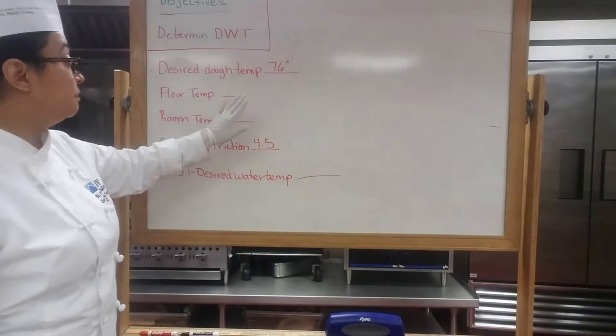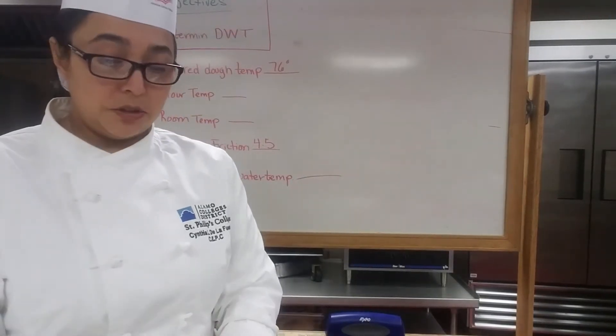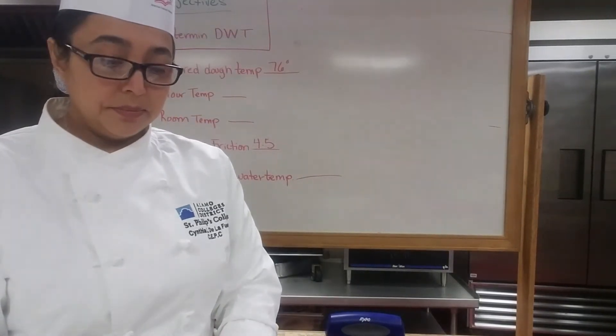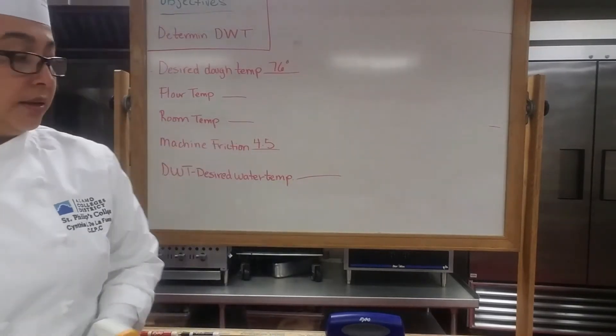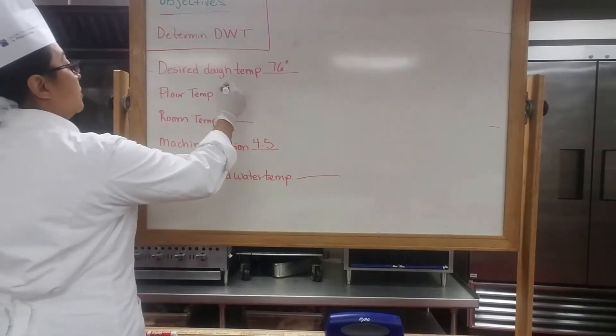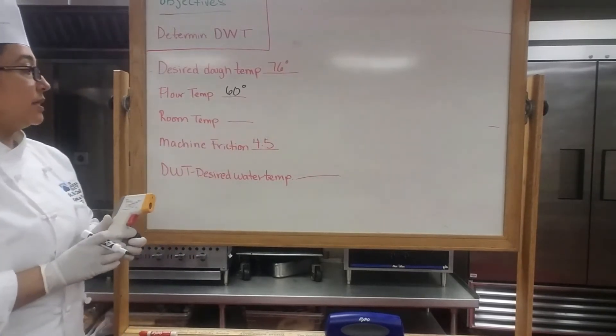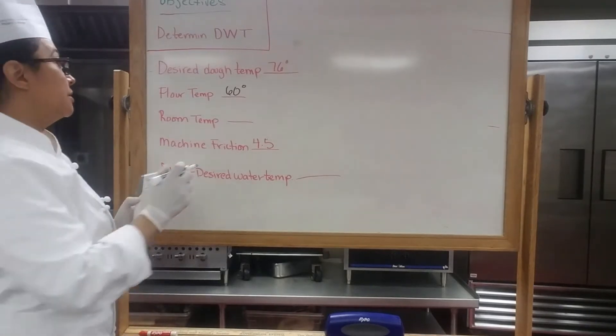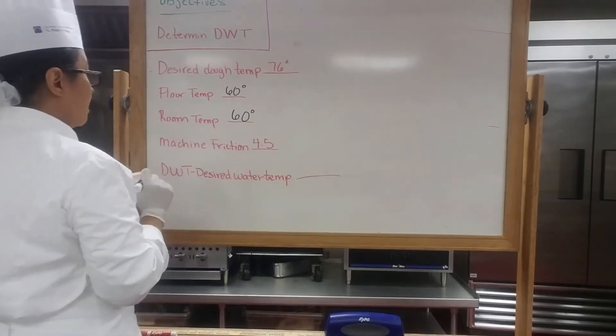Now we need to determine our flour temperature. We've done that before, just take your thermometer. Now I am in a different lab today and this lab tends to be a little colder than the other lab. We're going to take our room temperature which is at 60 degrees. Our machine friction I've already put in there.